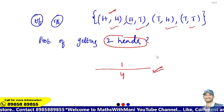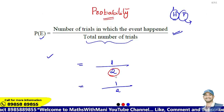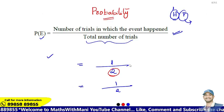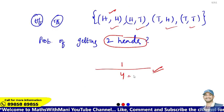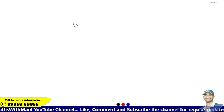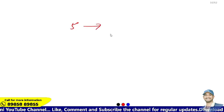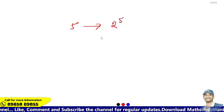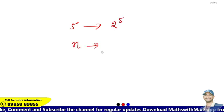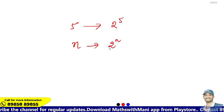Observe the pattern: 1 coin gives 2 outcomes, 2 coins give 4 outcomes, which is 2 squared. If you have 5 coins, the total number of outcomes is 2 to the power 5. In general, for n coins tossed simultaneously, there are 2 to the power n possible outcomes in the sample space.